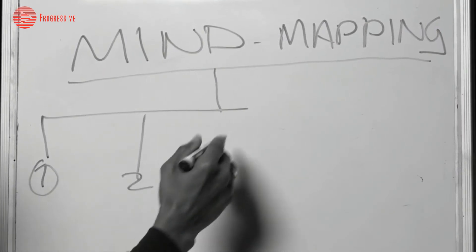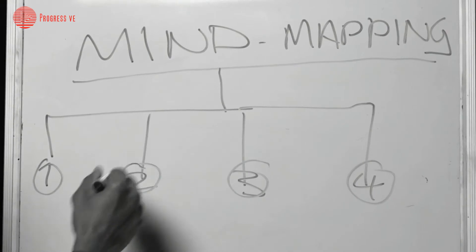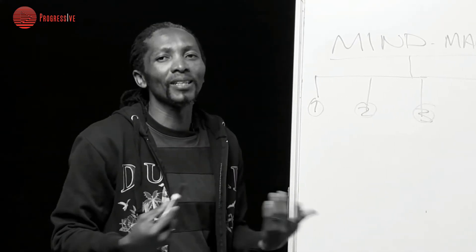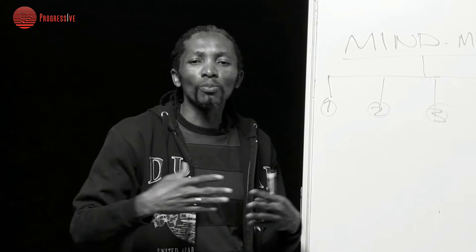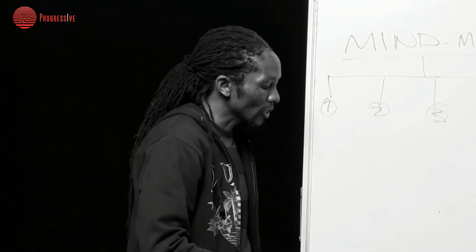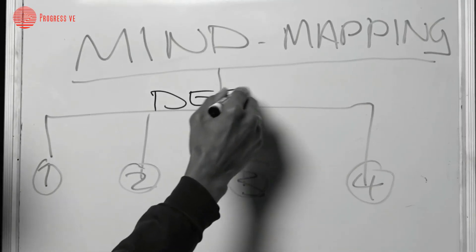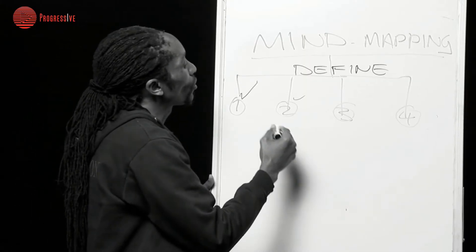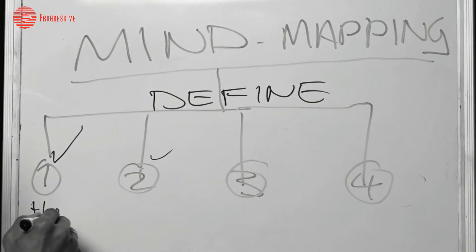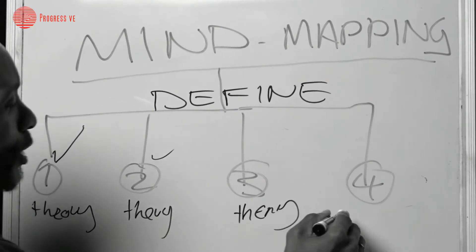Let's say we have definition number one, definition number two, definition number three, and definition number four. From these definitions, one needs to choose which one is more appropriate to your own understanding. When you talk about mind mapping, we are talking about something which starts from paper and explodes into a physical aspect. I'll break down the definition — would you choose definition number one or two? Some are more theory-based and some are more visual.